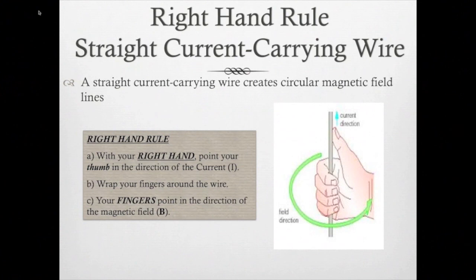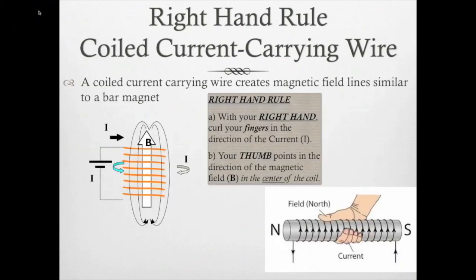The other thing we're going to have to look at is the right hand rule. It's kind of different for straight wires and for coiled wires. So if you have a straight wire, it's going to create a circular magnetic field. We have a thing called the right hand rule. This helps us remember which direction the field is going to go and which direction the current is going to go. Now if you have a coiled current, it's going to be a little bit different. So a coiled current-carrying wire creates magnetic field lines similar to a bar magnet. The picture on your left hand side is the field lines, notice it's similar to the bar magnet. And then the picture on the right hand side shows the right hand rule.